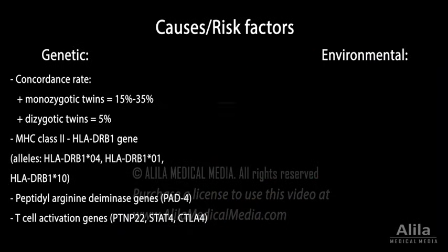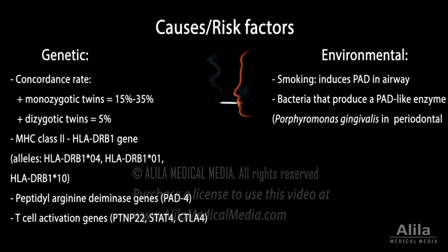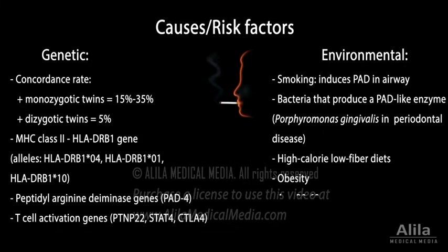Notable environmental factors include smoking, which induces PAD expression in the airway, and some bacteria that produce a PAD-like enzyme, causing increased citrullination. Other risk factors include high-calorie, low-fiber diets, and obesity. Rheumatoid arthritis can occur at any age, but it most commonly starts in middle age. Women are somewhat more susceptible than men.